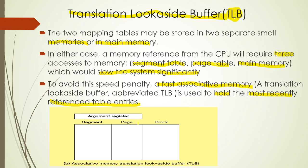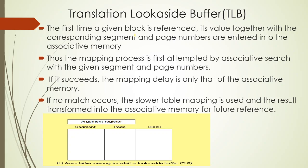We call the most recently referenced table entries cache memory. The first time a given block is referenced, three memory accesses are required — the segment memory, page memory, and main memory. That block is referenced, and the value together with the corresponding segment and page number are entered into the associative memory, which is the TLB.